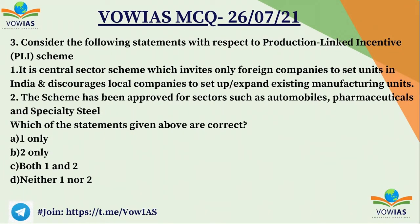The third question: Consider the following statements with respect to the Production Linked Incentive (PLI) Scheme. Statement 1: It is a central sector scheme which invites foreign companies to set up units in India and discourages local companies to set up or expand existing manufacturing units. Statement 2: The scheme has been approved for sectors like automobile, pharmaceutical and special steel. Choose the correct answer — A. 1 only, B. 2 only, C. Both 1 and 2, D. Neither 1 nor 2.